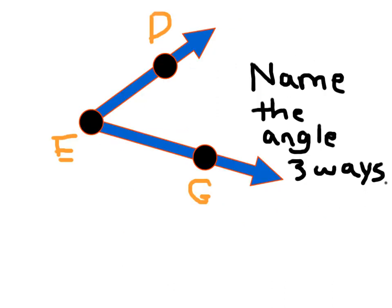Oftentimes, you'll see these types of questions as we're naming angles. It'll say name the angle three ways. And so this angle has three different names. We use that angle symbol, and again, the angle symbol never changes based on the angle.